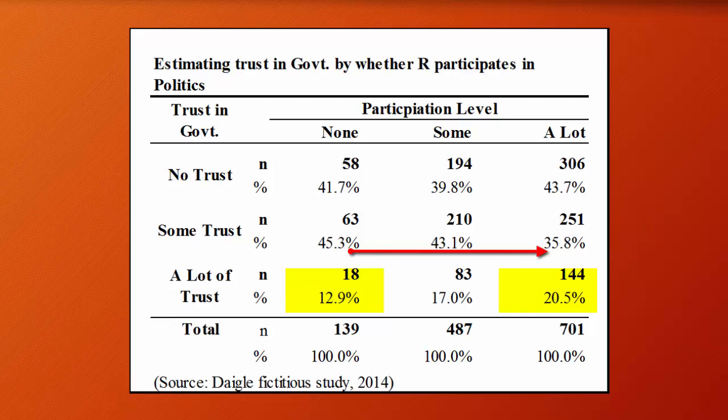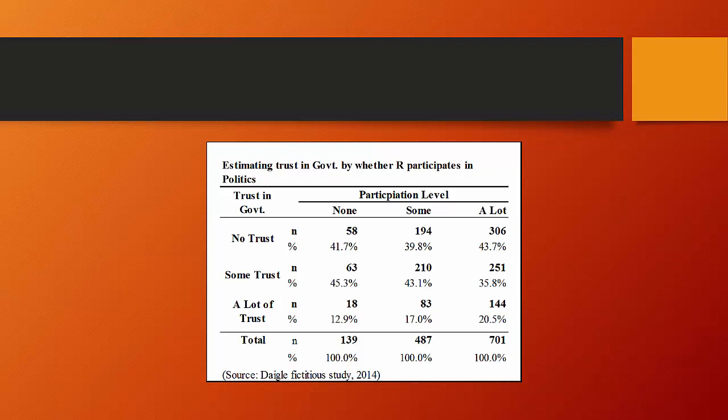So there seems to be some differences as we go across the categories of the independent variable in the values of the dependent variable.